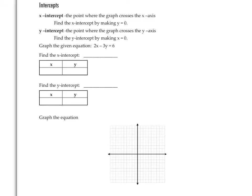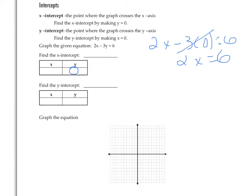We're going to try it on this equation: 2x − 3y = 6. To find the x-intercept, we make y = 0 and substitute into the equation. That gives us 2x − 3(0) = 6. Since 3 times 0 is 0, we have 2x = 6. Dividing by 2, x = 3. That gives us the ordered pair (3, 0) as the x-intercept.